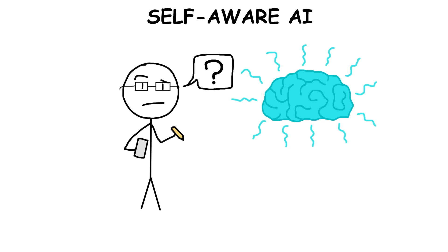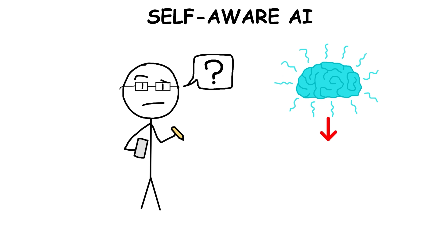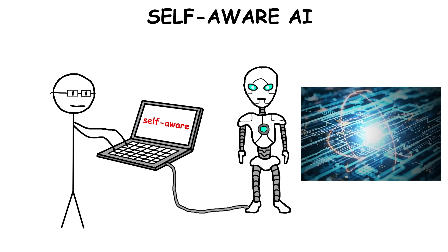Scientists still don't fully understand what consciousness really is, so creating it in an AI feels almost impossible right now. If we ever manage to make a self-aware AI, it might need incredibly advanced tech, like quantum algorithms, to simulate or create consciousness.